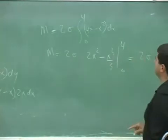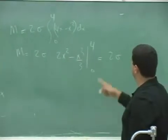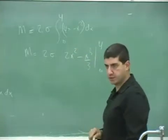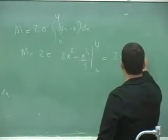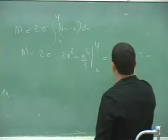That's gonna be 2x squared minus x cubed over 3, so that's gonna be 0 to 4. So that's gonna be 4 squared, 16 times 2 is 32, minus 4 cubed over 3.